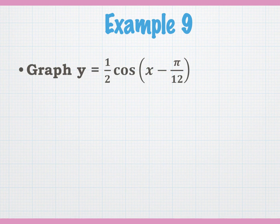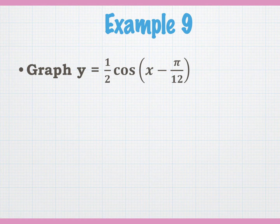Quick review of sine and cosine, because you have to know how to do these before we get into the stuff for today. Today is the cosecant and secant graphs, which are bounced off of these. So you have to be a master of sine and cosine before we get to that. We're going to find the A here — what's our A for this example?